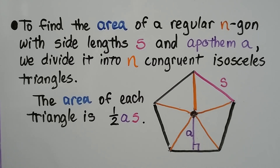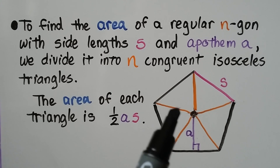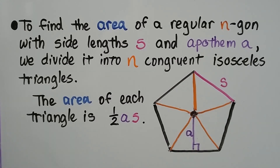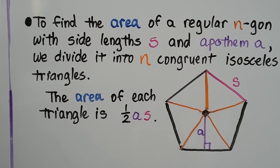To find the area of a regular n-gon with side length s and apothem a, we divide it into n congruent isosceles triangles. Here we have a pentagon with a given side length, and we've got five congruent isosceles triangles. The area of each triangle is half the apothem times the side.